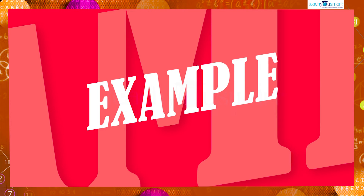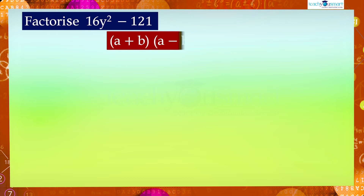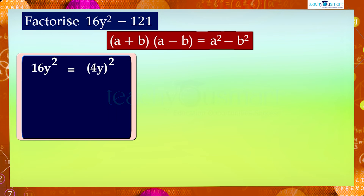Let's see another example. Factorize 16y square minus 121. The given expression 16y square minus 121 contains only two terms, so we use the identity a plus b multiplied by a minus b equals a square minus b square. We can write 16y square as (4y)² and 121 as 11², that is a equals 4y and b equals 11.